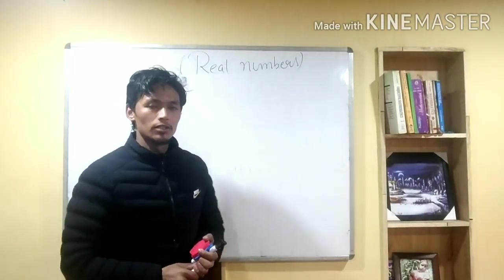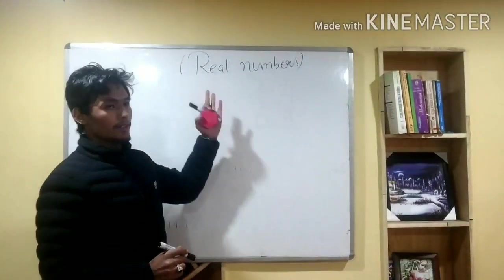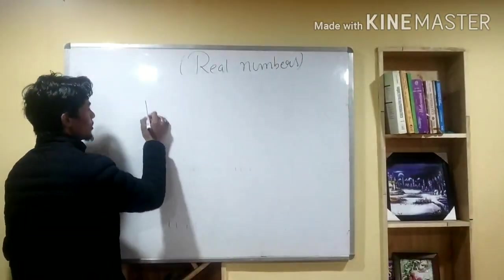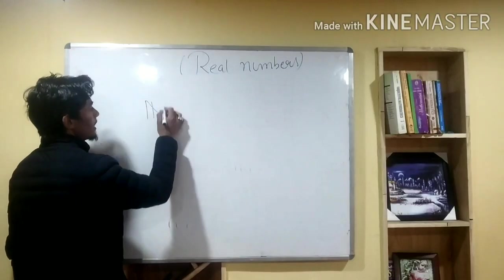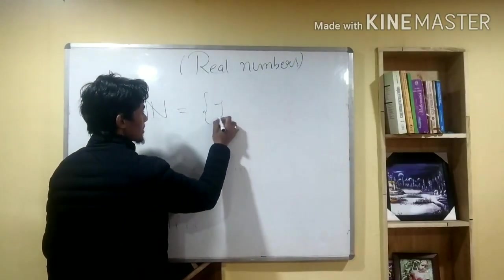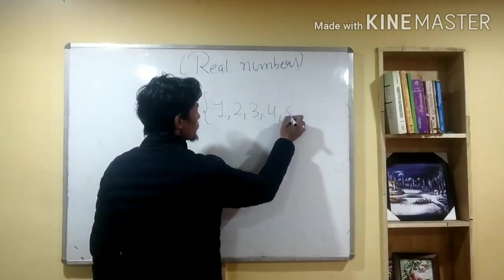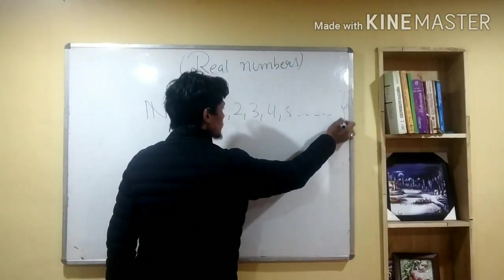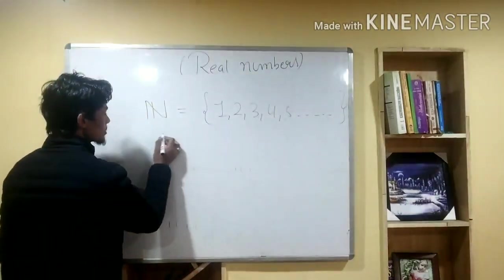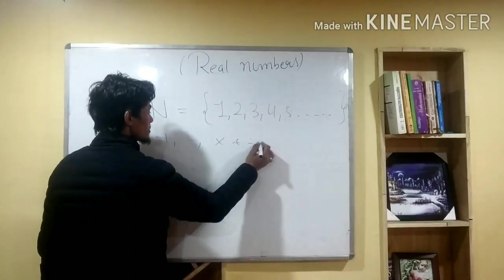In this video, we are going to discuss natural numbers. If you want to denote the natural number, the natural number is 1, 2, 3, 4, 5, 6, 7, up to infinity. Now, let's say the operations are plus, minus, multiply, and divide.